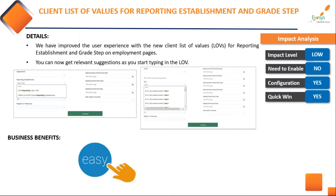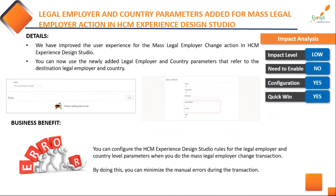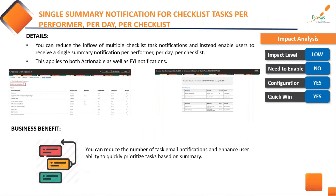The list of values for reporting establishment and grade step now provides relevant suggestions as you type. For organizations that do a lot of mass legal employer changes or transfers, you now have the ability to add legal employer and country parameters in Design Studio, create rules to ensure that the mass legal employer change transaction has minimal errors. This does require a little configuration but improves all your manual work. Additionally, you can now send a single summary notification for checklist tasks per performer, per day, per checklist, reducing the number of email notifications and giving a summarized view.